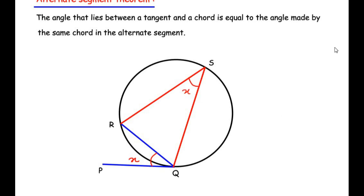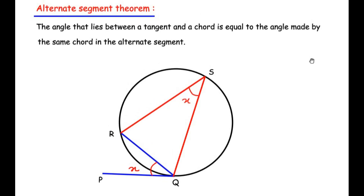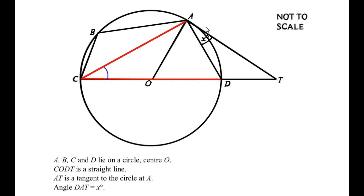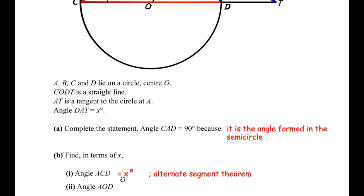Now in our diagram, tangent AT makes angle x with chord AD. The same chord makes an angle at point C in the major segment. So if angle DAT is x degrees, then exactly x degrees is formed at angle C. Therefore angle ACD equals x degrees by the alternate segment theorem.